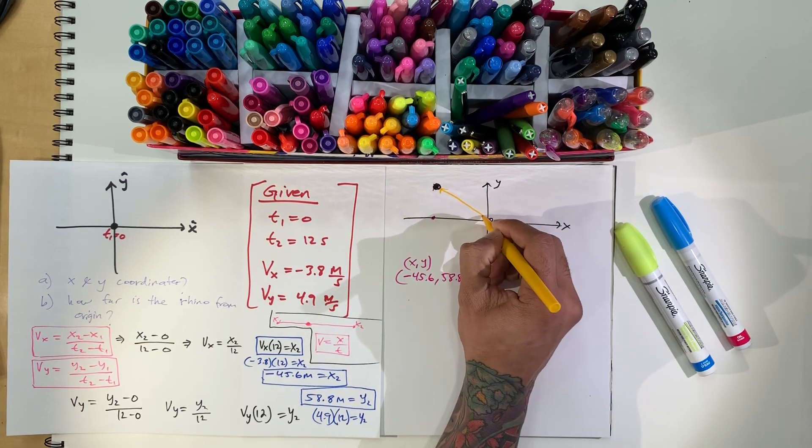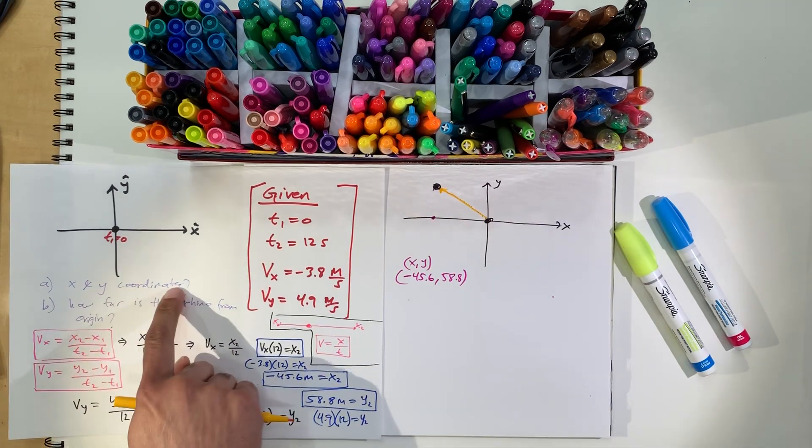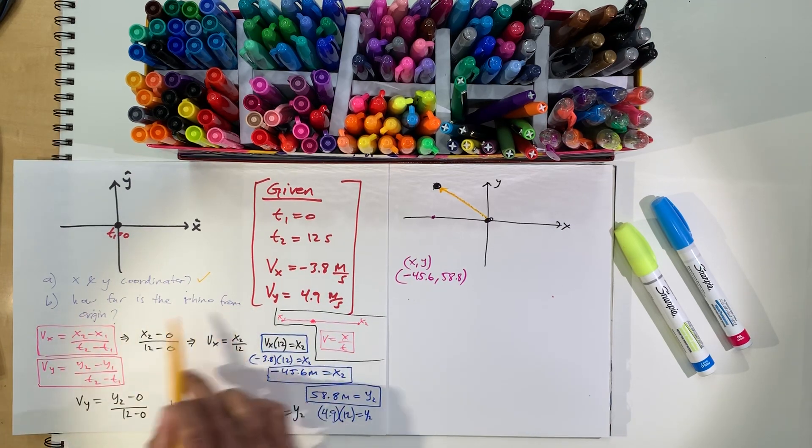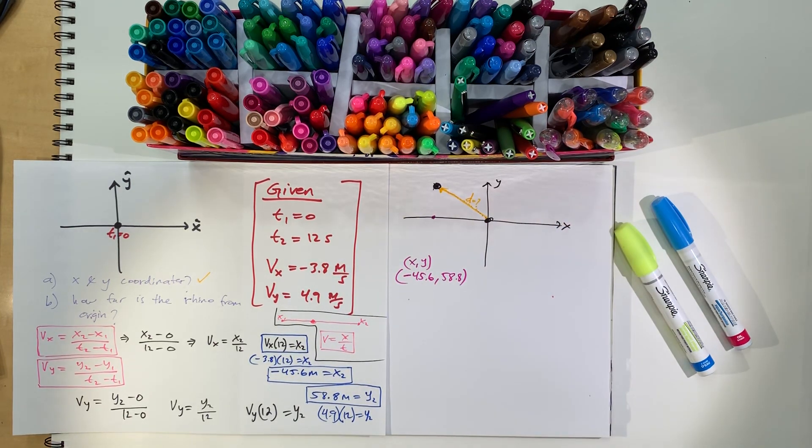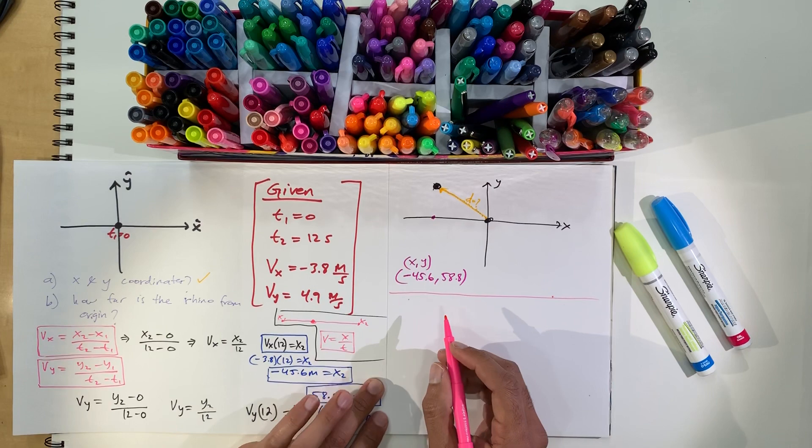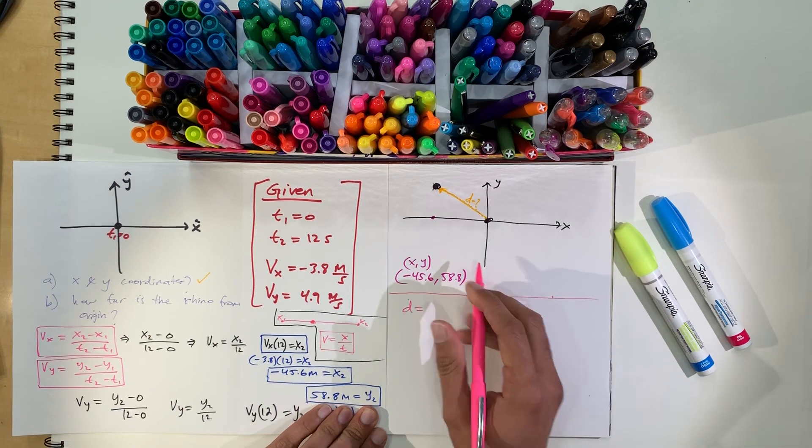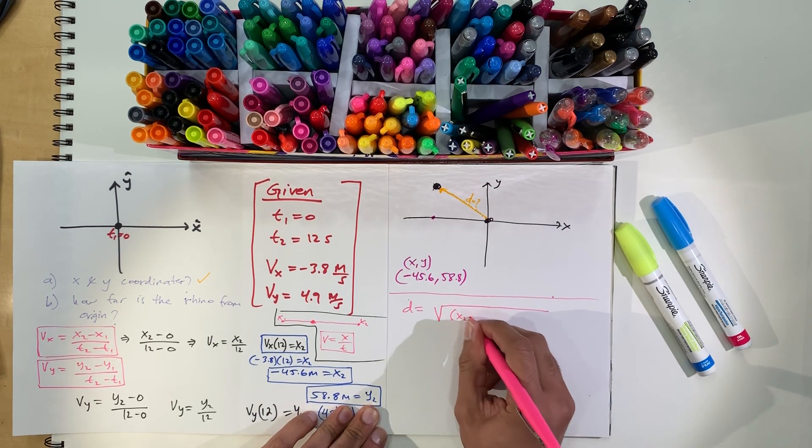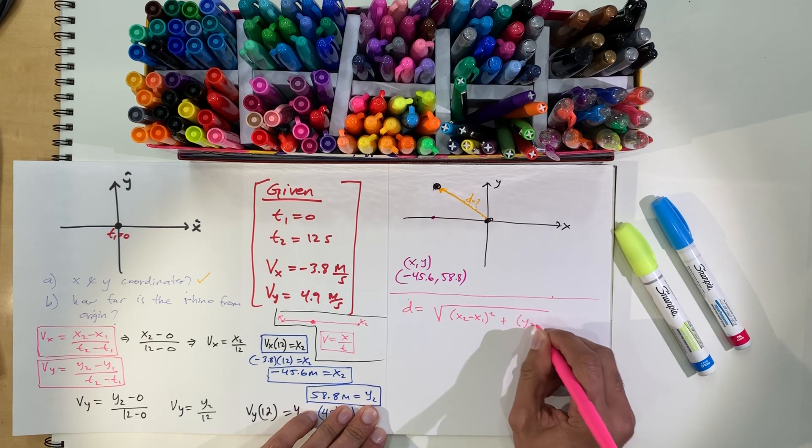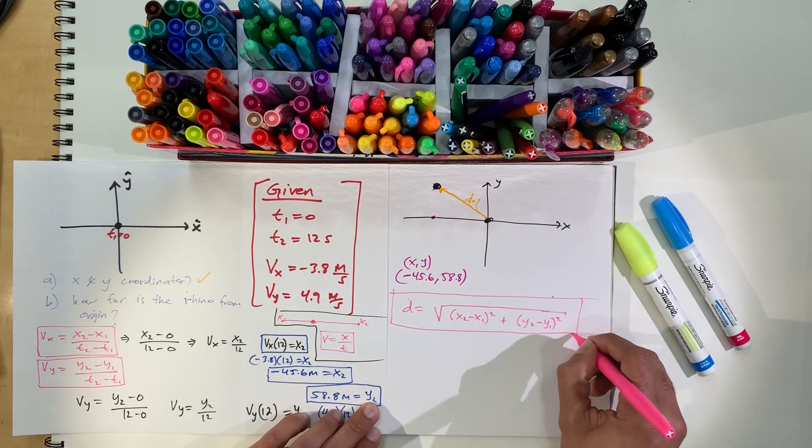So, the rhino traveled from here all the way here. And we want to know now, so, we got the x and y coordinates. How far is the rhino from the origin? So, what distance is this? All right. After that, we got distance formula. I think this is from trig or algebra, Cal 1. So, you might have seen this. You have x2 minus x1 squared plus y2 minus y1 squared. All right. It's pretty simple. Plug things in.